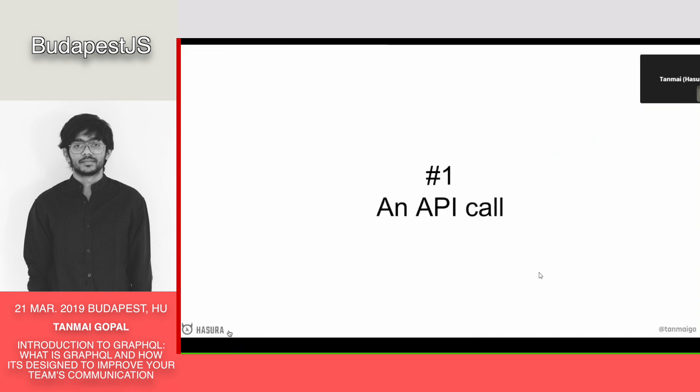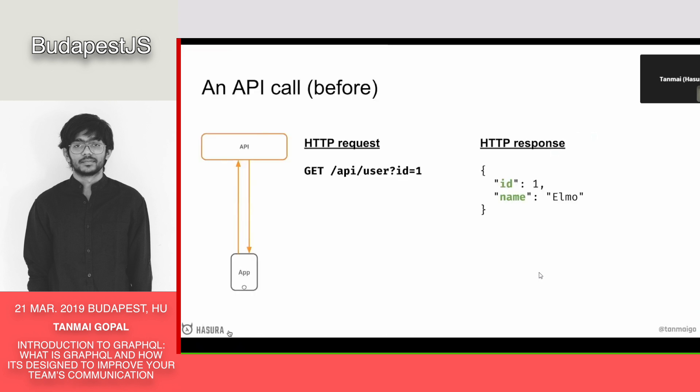The best way to start is to talk about an API call. Let's say we have an API call for a user profile page — we're building a user profile page on a mobile web app. We make an API call to GET /user?id=1, and we get back a JSON from the server that says id is 1 and name is Elmo. We get that JSON, render it into the UI, and that's our API call done. This works fine.